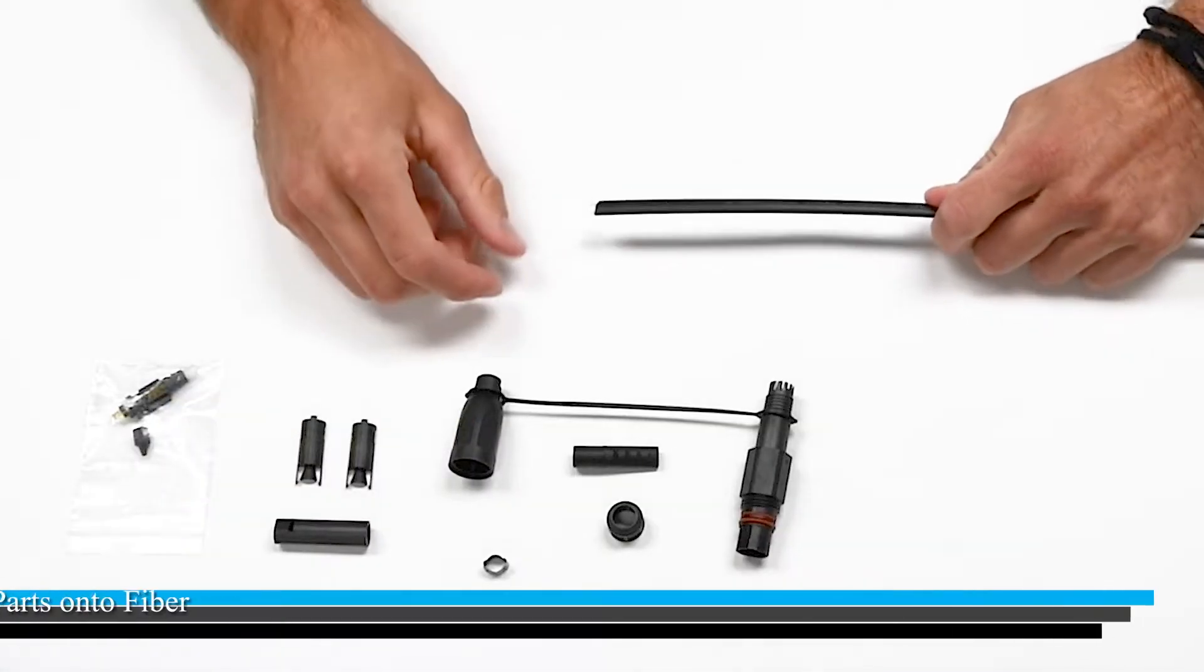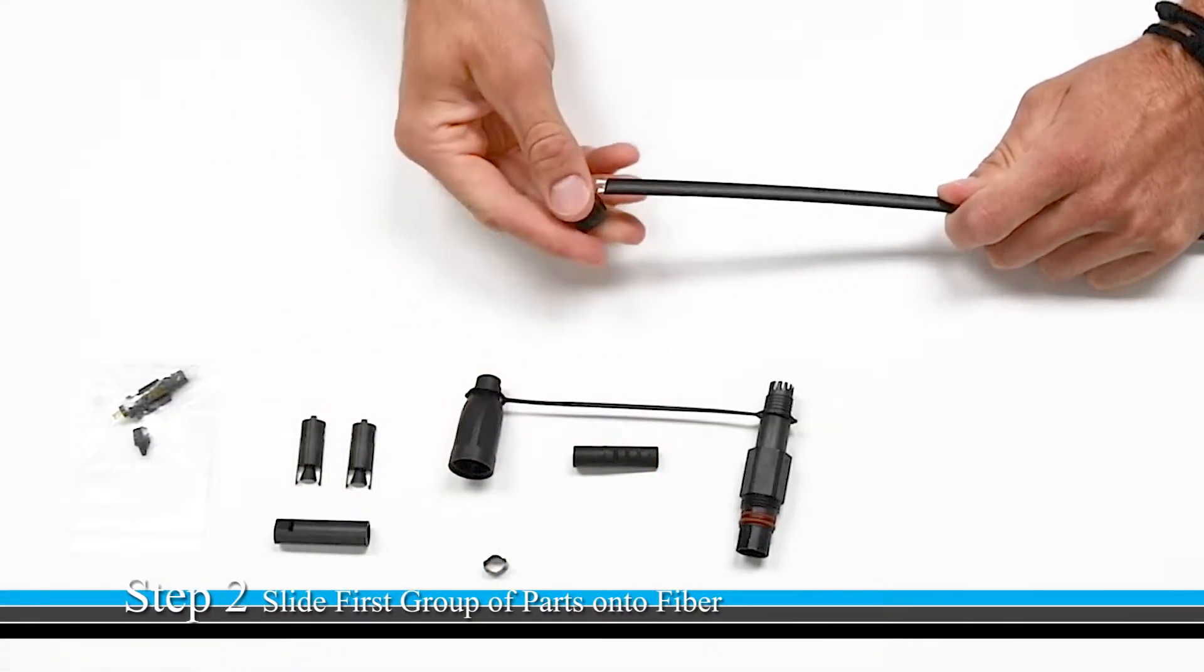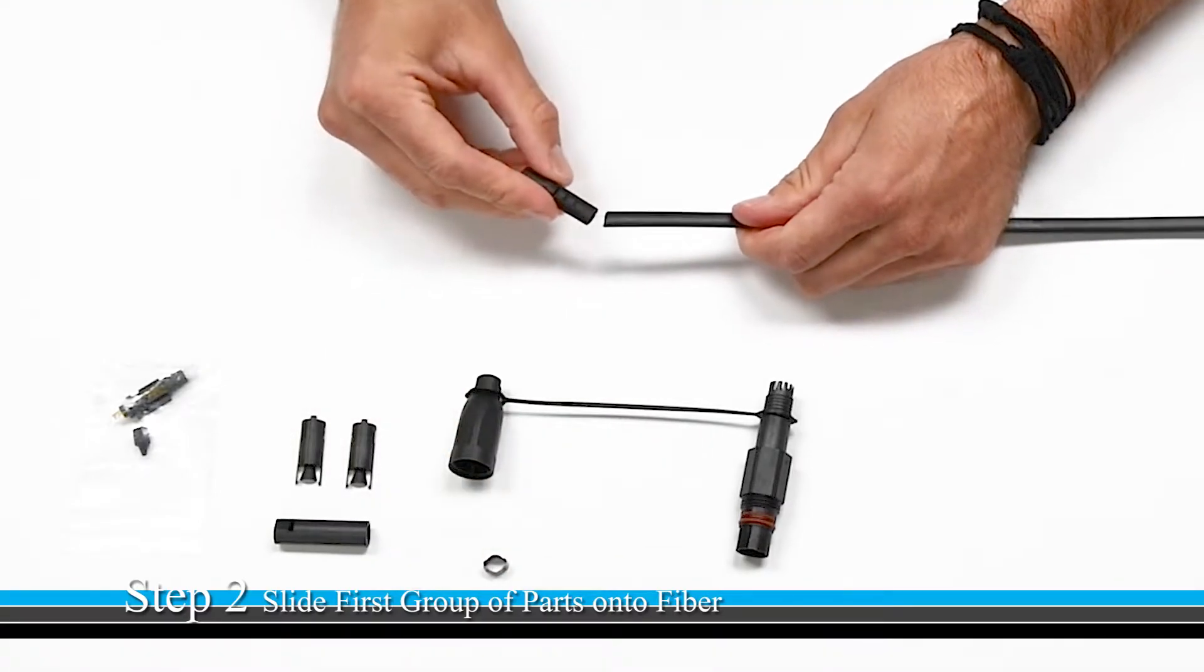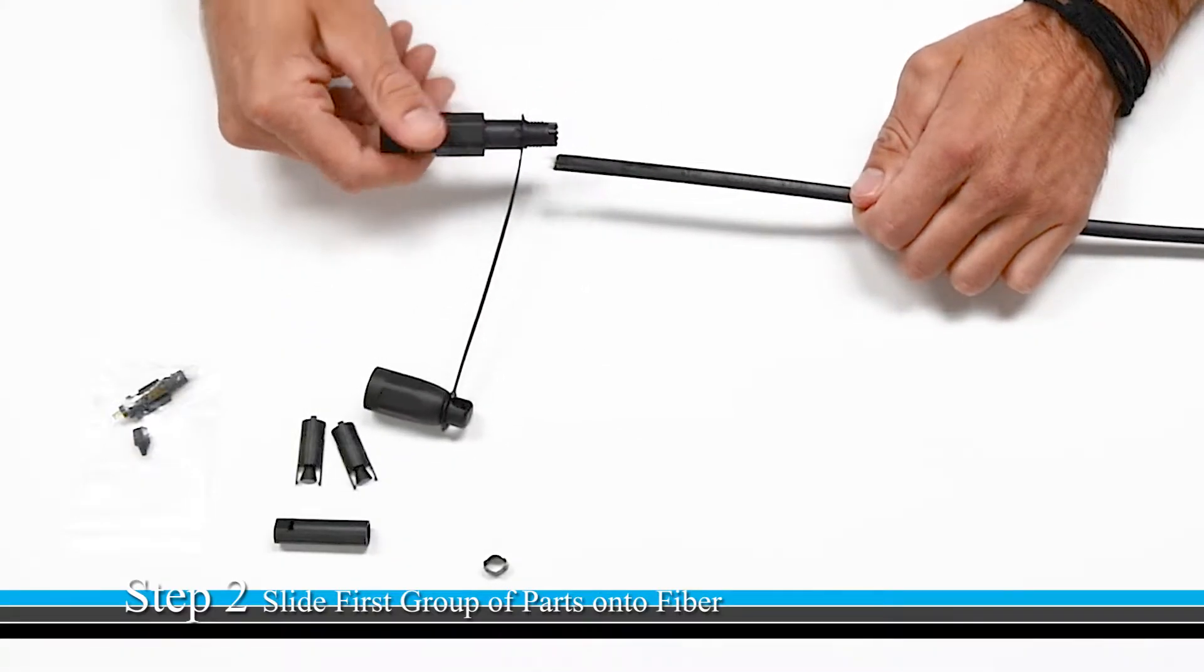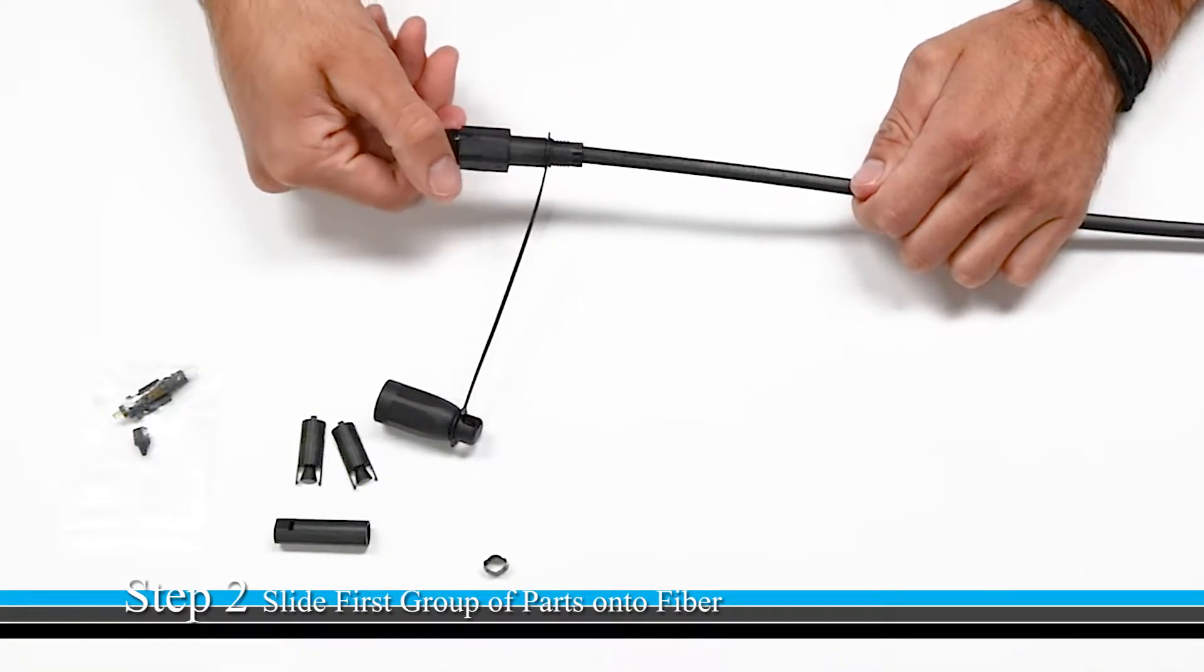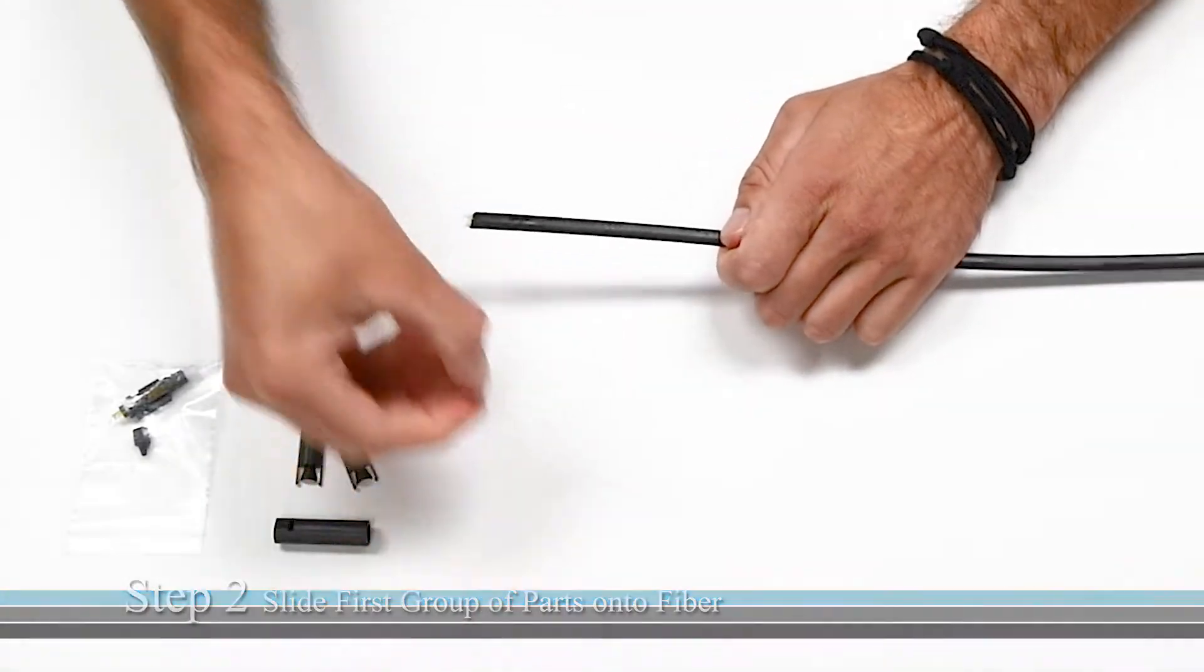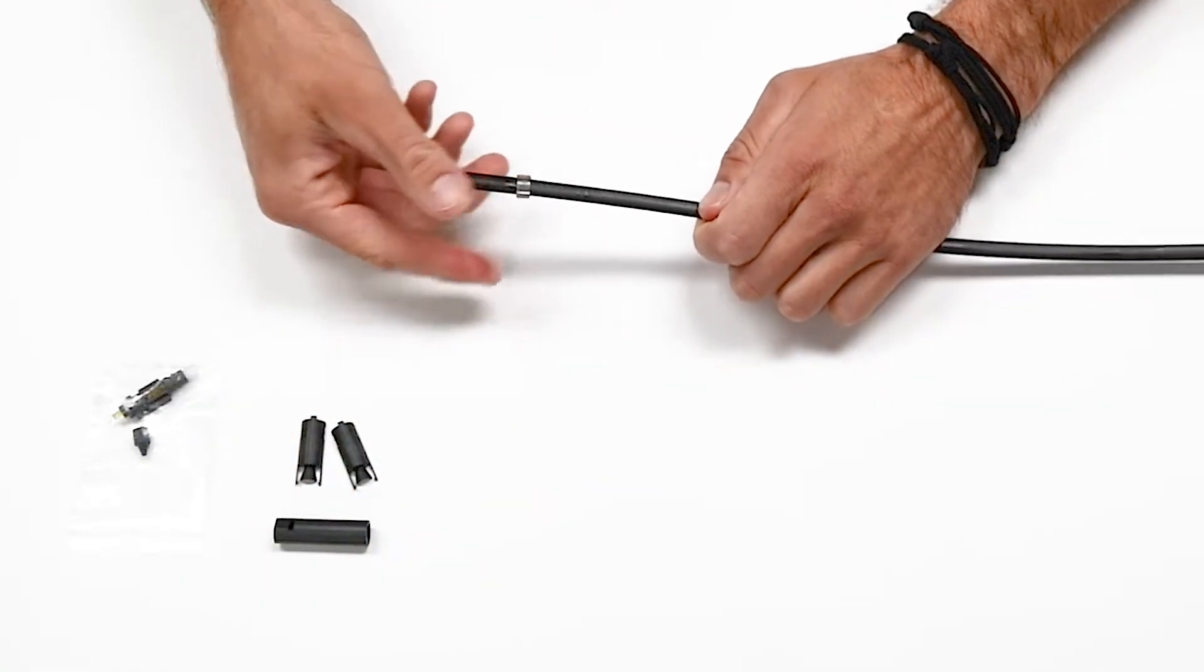Before stripping the cable, you want to place the compression nut, the compression boot, as well as the housing assembly onto the cable, followed by the two-ear crimp.